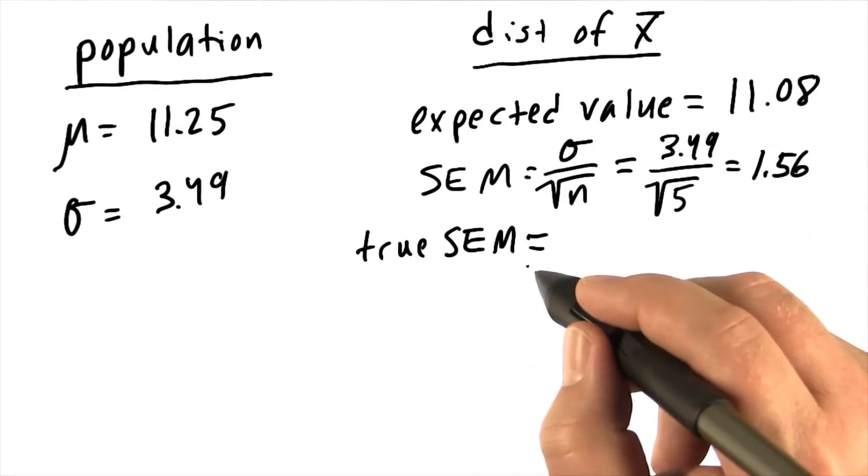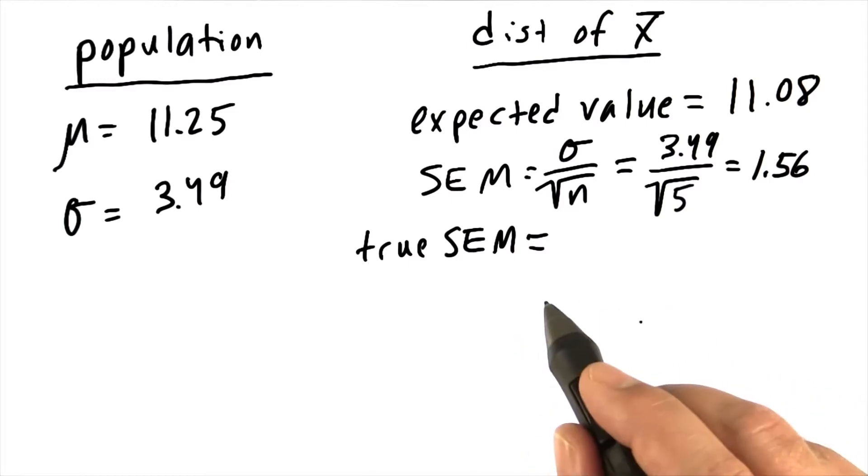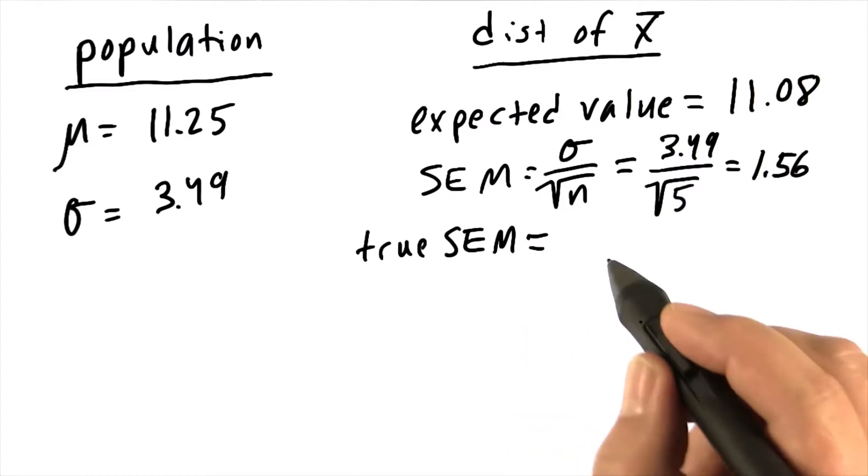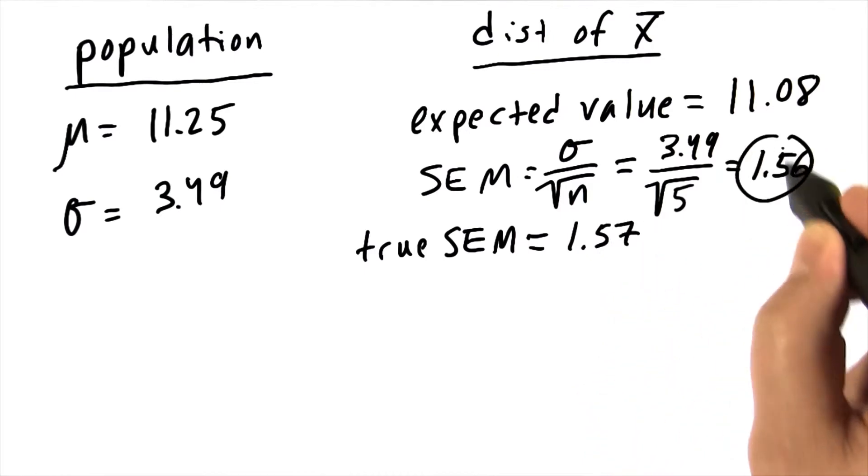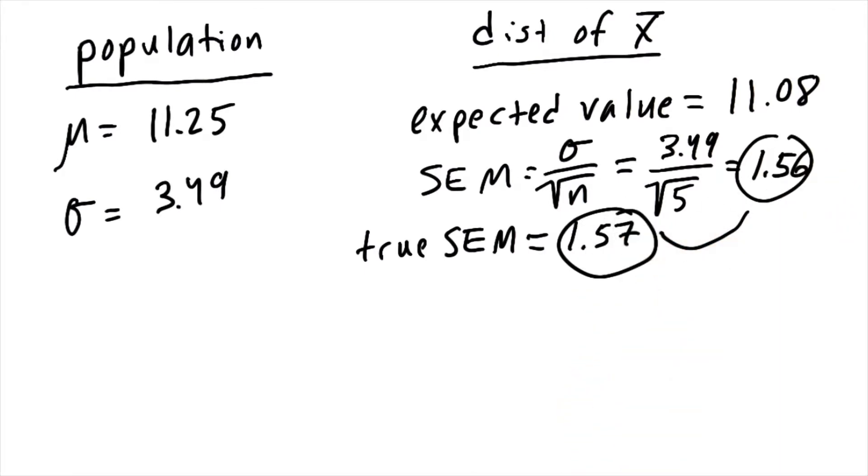If we took the true standard error of the mean—in other words, computed the actual standard deviation for all of the sample means we just took—that value is 1.57, very close to that given by the formula.